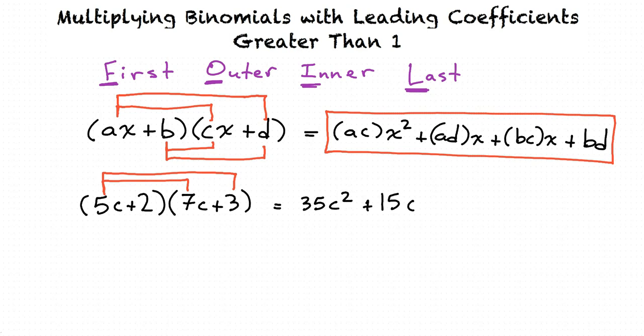Now we multiply the inside terms 7c and 2, which results in 14c. Finally, we multiply 3 and 2, which results in 6. Does this mean our final answer is 35c squared plus 15c plus 14c plus 6?